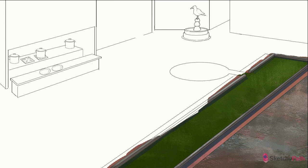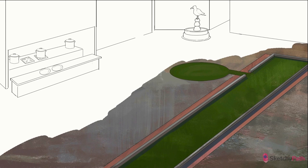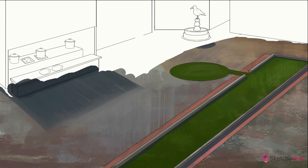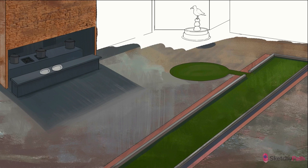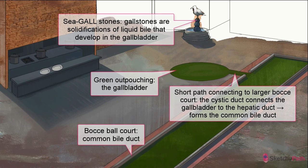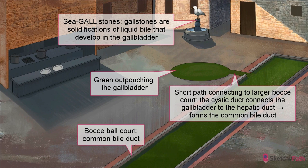Gallstones are solidifications of the liquid bile that develop in the gallbladder. See that green outpouching to the left of the bocce cord? It's meant to evoke an image of the gallbladder, sending a short cystic duct over to the hepatic duct, thus forming the common bile duct that carries bile to the sphincter of Oddi at the duodenum. In this scene, stones are going to take the form of bocce balls, just rolling down that bile tract.